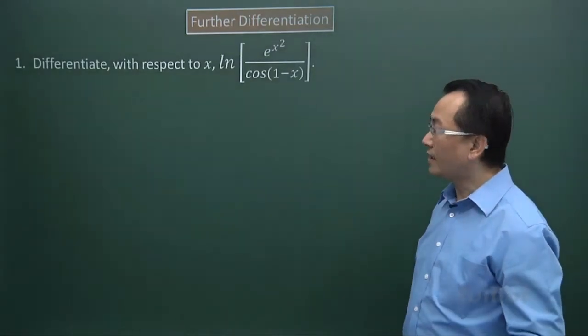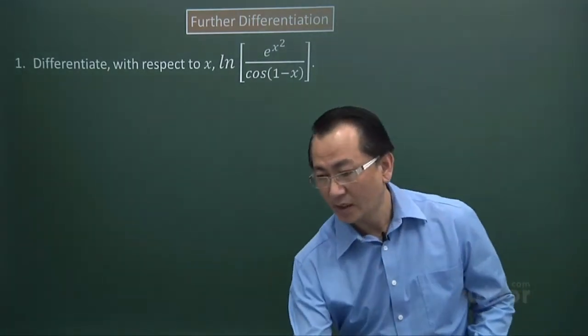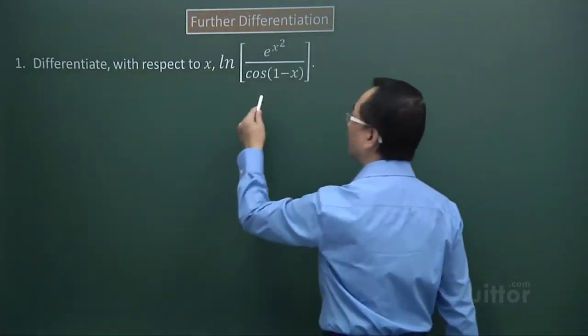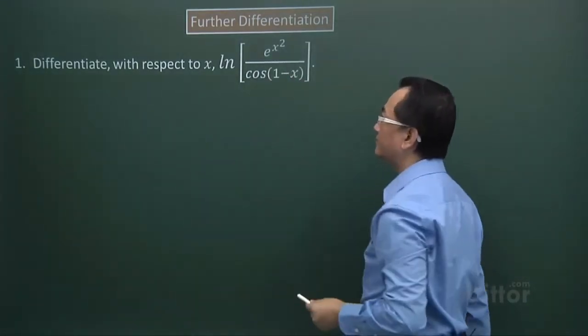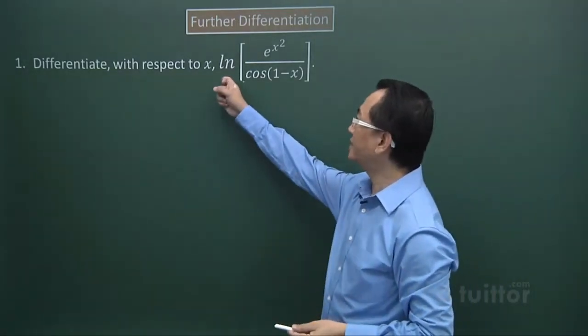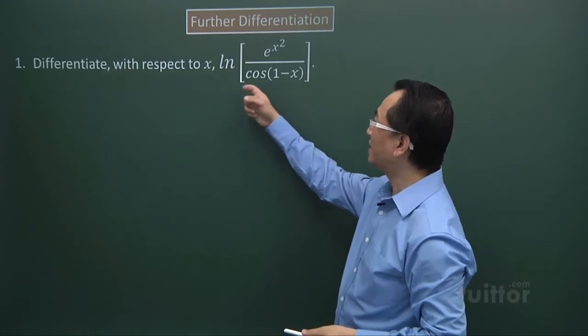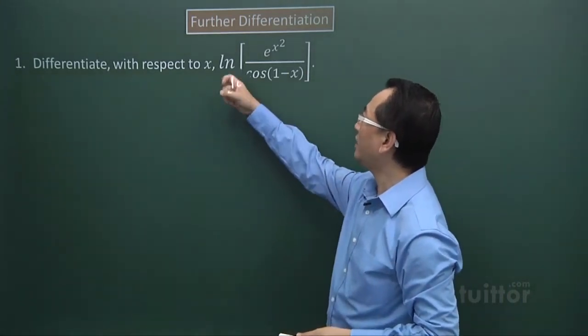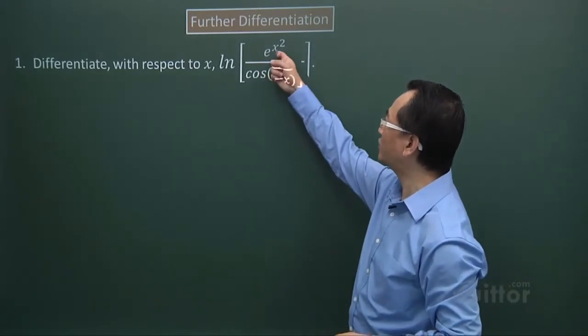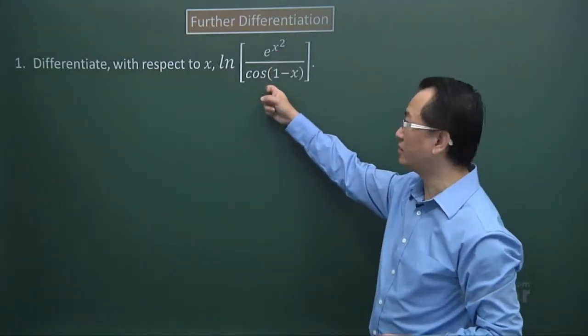Question one, we have to differentiate this function. Now, you can see this expression here is ln. Within that, we have the exponential part and the trigonometric function.